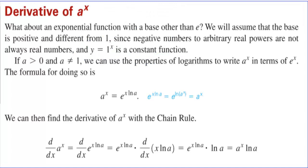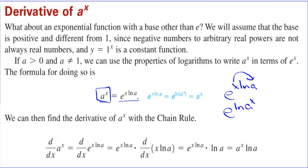What about the derivative of a to the x? What about an exponential function with a base other than e? We assume the base is positive and different from 1, since negative numbers to arbitrary real powers are not always real numbers, and y equals 1 to the x is a constant function — it's always 1. If a is greater than 0 and a does not equal 1, we can use properties of logarithms to write a to the x as e to the x natural log of a. You can bring the exponent back up as a power, and e and natural log cancel, leaving a to the x.